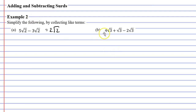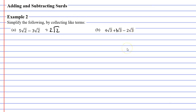Moving on to question b, we have three like terms — they all have the surd root 3. The middle term has no number to its left, and just like in algebra, there is technically a 1 there. So when we add or subtract the coefficients, we get 4 plus 1 is 5, minus 2 is 3. So we get 3 root 3.